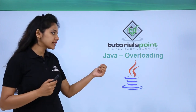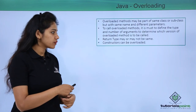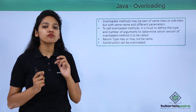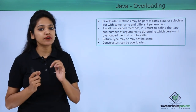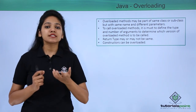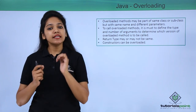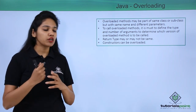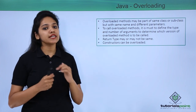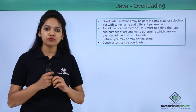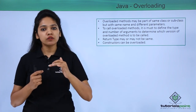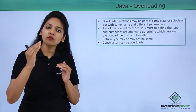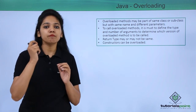The first type of polymorphism is method overloading. Polymorphism is of two types: compile time and run time. Compile time, which is static polymorphism, supports method overloading. Method overloading is a feature that allows a class to declare two or more methods with the same name but different parameters.